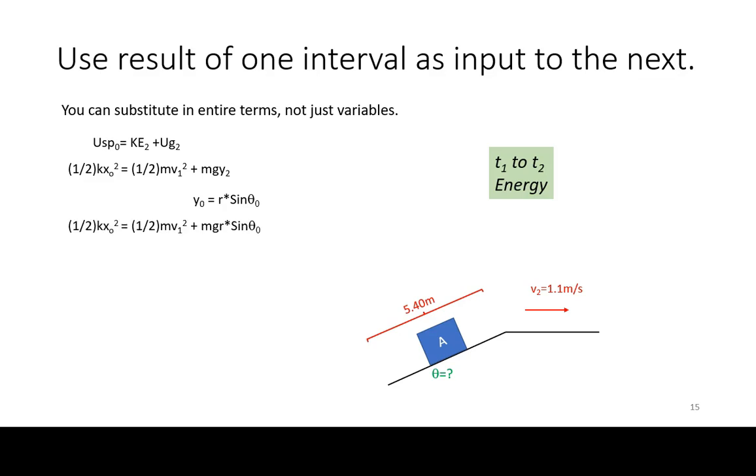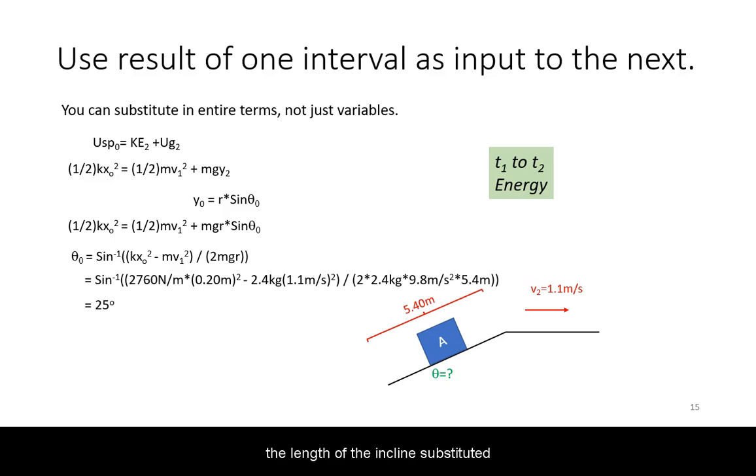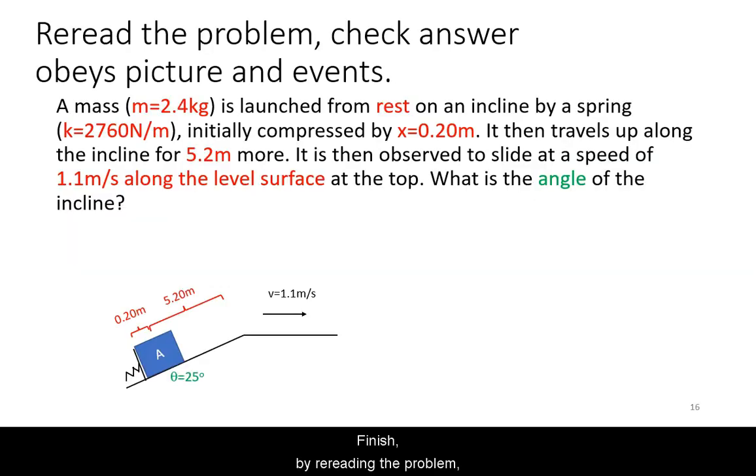But remember what variable you are solving for. Also notice that in this case the length of the incline substituted was from the very beginning of the first time event to the top of the incline and not just the part where the mass was free. Finish by rereading the problem and making sure you answered it in a sensible way.